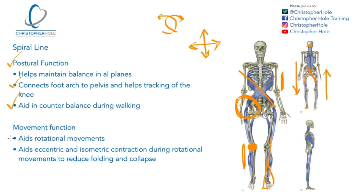The movement function — we've kind of mentioned that one with the counterbalancing during walking, but we've also got aids for rotational movement. The very simple reason is it's connecting the rotational muscles that aid in rotational movements, and then the fascia or the spiral line enhances that and in a sense brings it together to make it one whole movement. Finally, it aids eccentric and isometric contractions during rotational movements to reduce folding and collapse. This is not only what the spine wants, not only what the muscles are doing, but it's also how the fascia is designed to work.